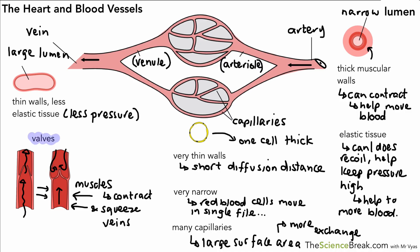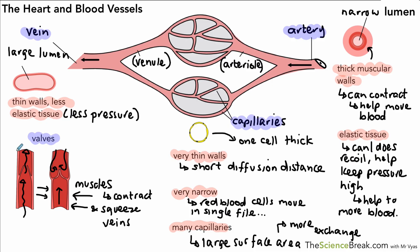So we have our arteries, veins, and capillaries — the main blood vessels we need to be able to describe. The key features of these different blood vessels and why those features are important are highlighted. Thanks for watching and I'll see you in the next one.